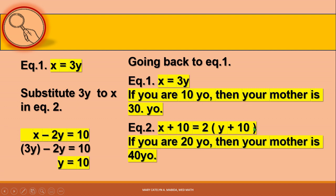Substituting 3Y for X in equation 2: 3Y minus 2Y is equal to 10, so Y is equal to 10. If you are 10 years old now, then your mother is 30 years old. Checking with the original equation 2: 10 years from now, you will be 20, and your mother will be 40, which is 2 times 20. Therefore, you are 10 years old now.